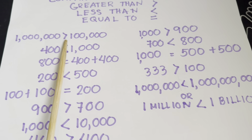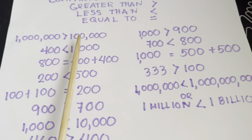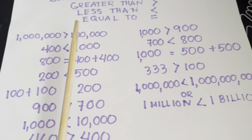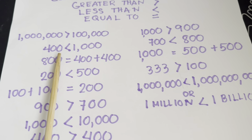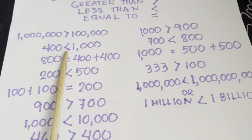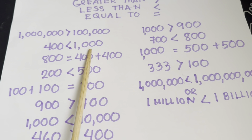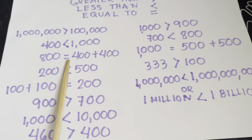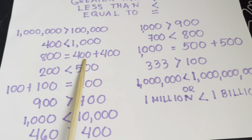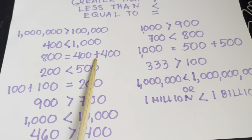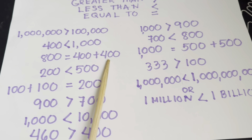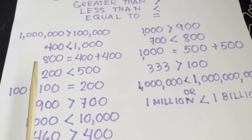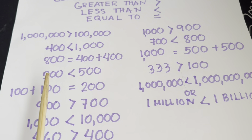One million is greater than one hundred thousand. Four hundred is less than one thousand. Eight hundred is equals to four hundred plus four hundred, so eight hundred is equals to eight hundred.